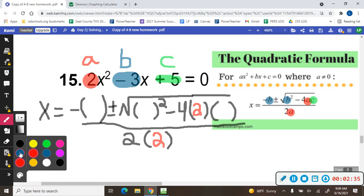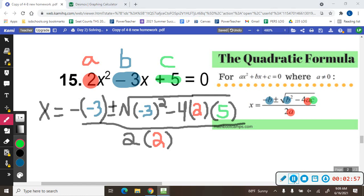b is negative 3. So I'm going to put a negative 3 here. And a negative 3 there. And then c, c goes right there. c would be 5.